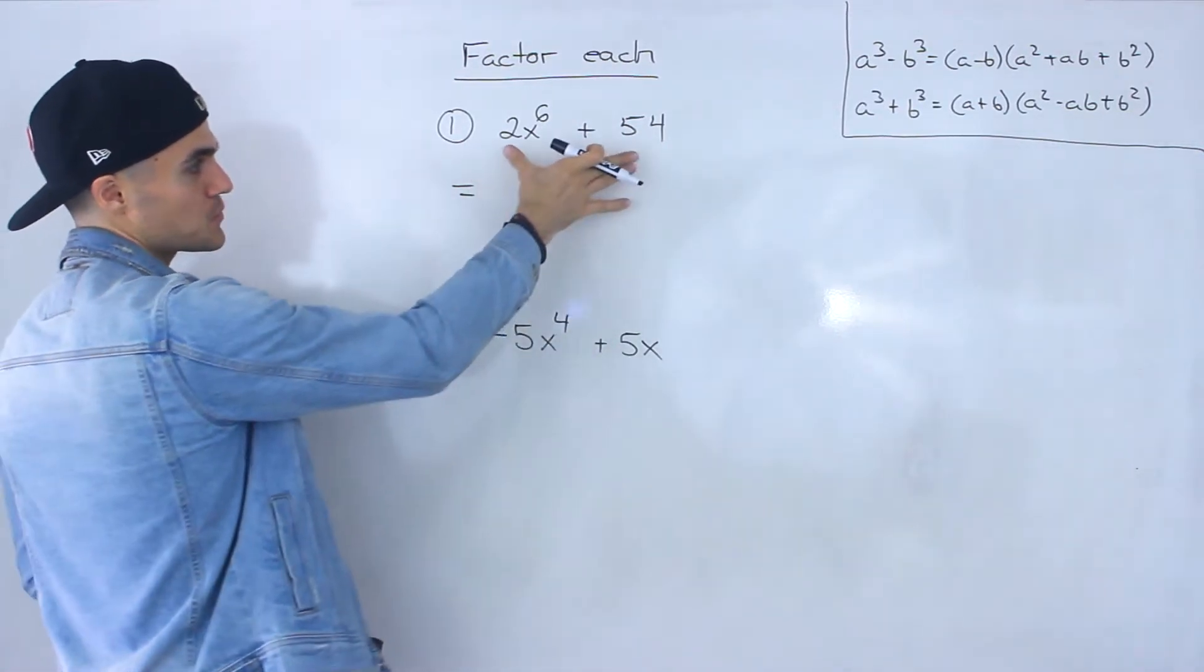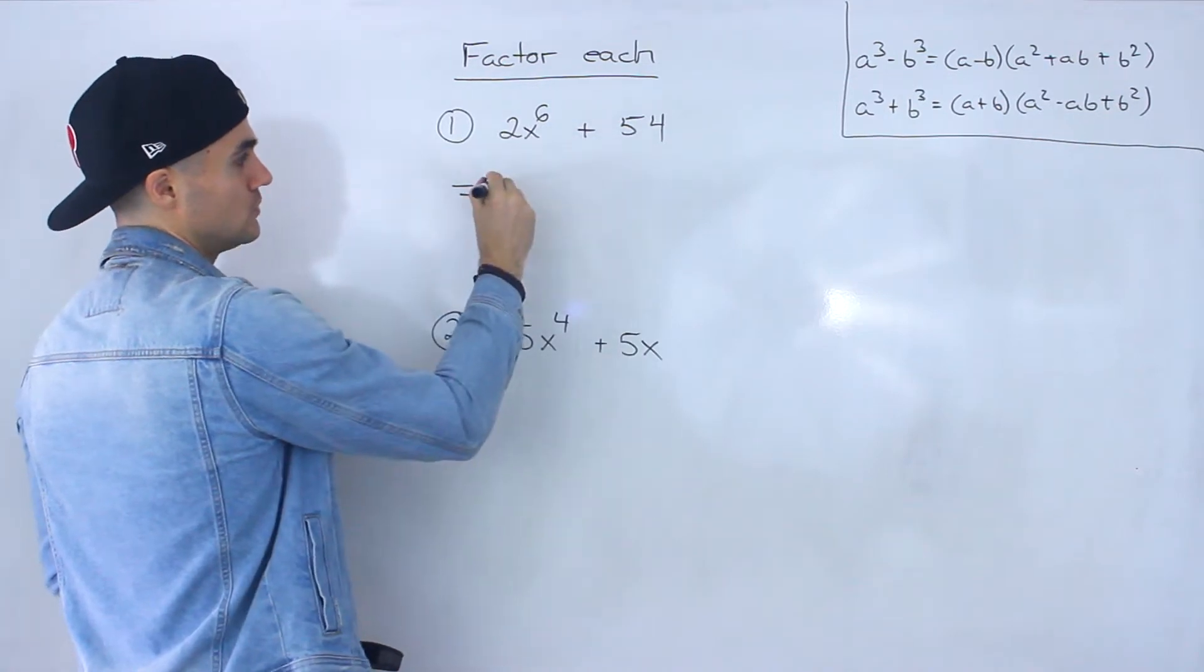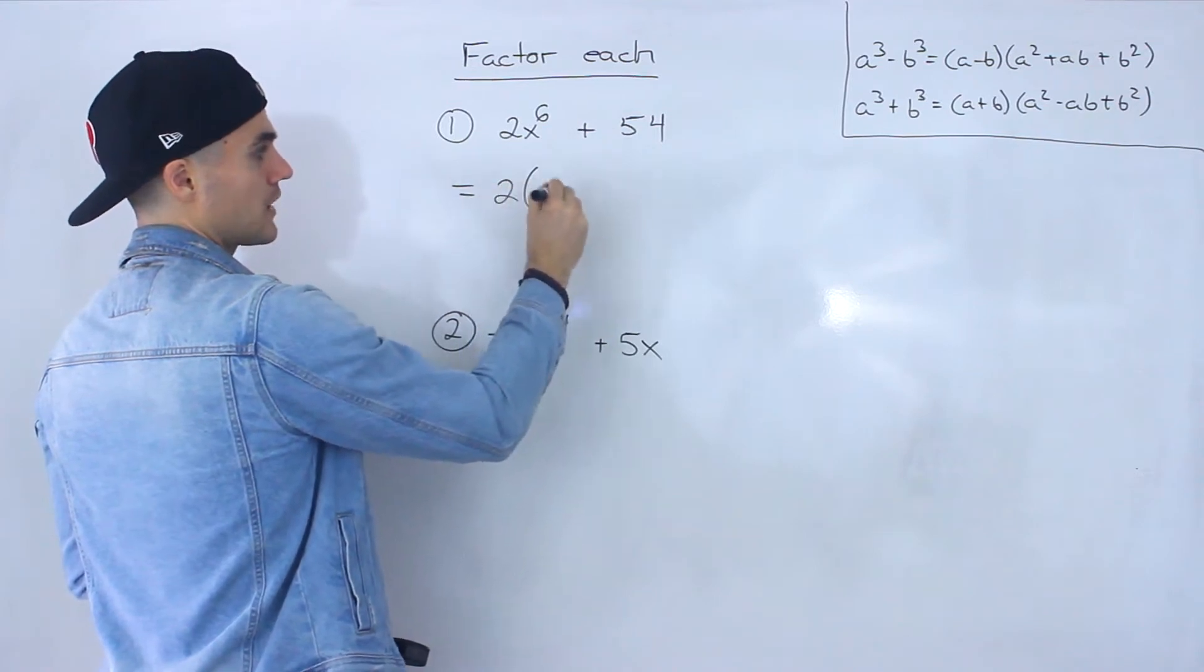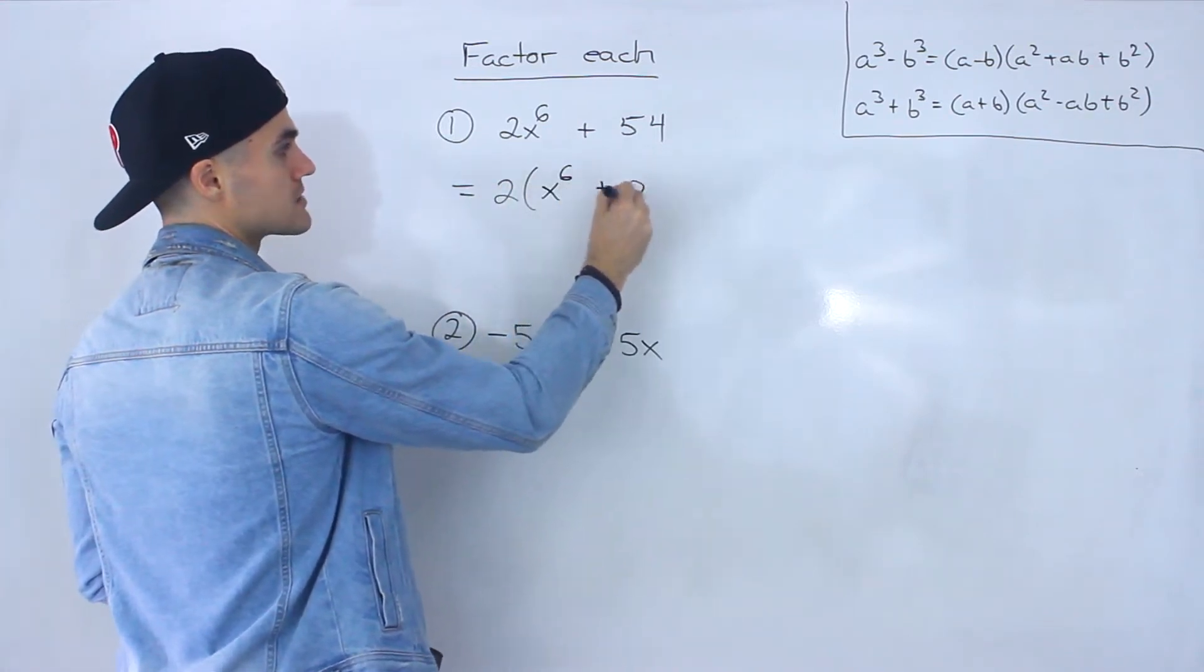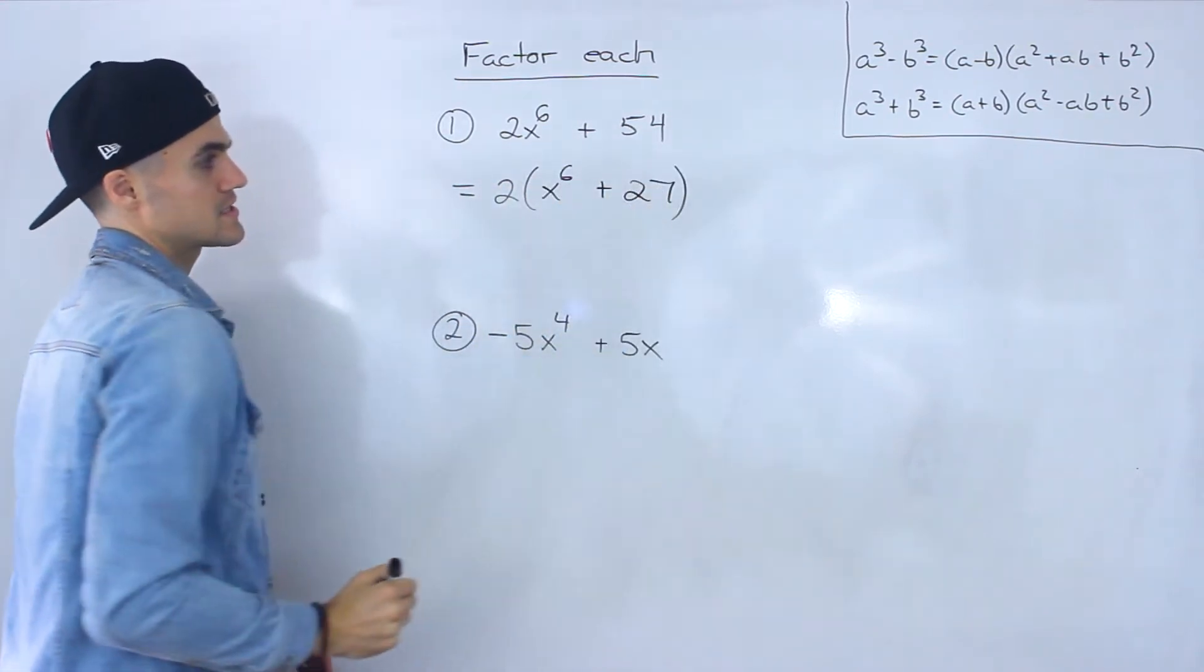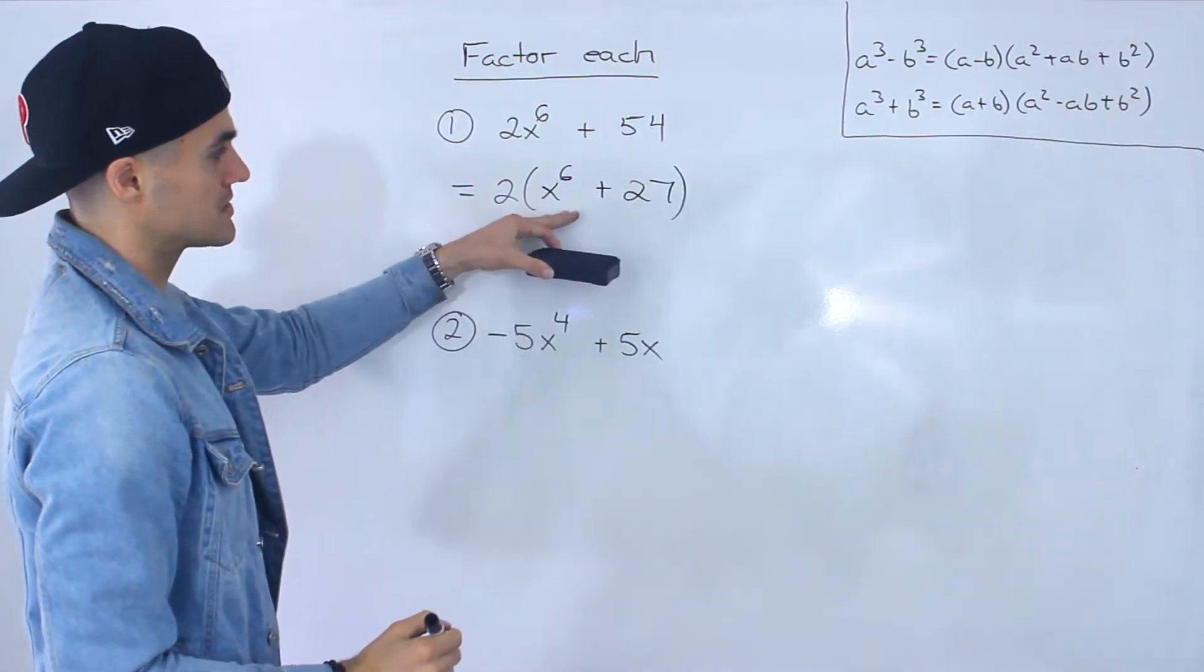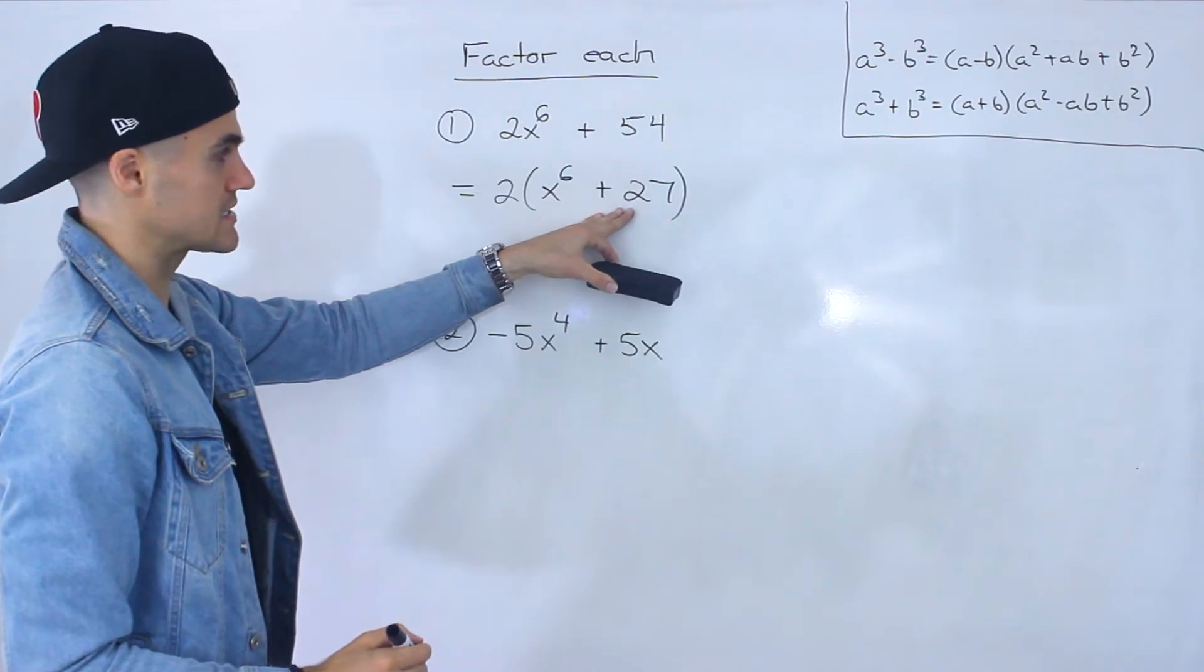Can you make it more simple? And notice that in this case we can. We could factor out a 2 from both of these expressions and we would end up with x to the 6 plus 27.